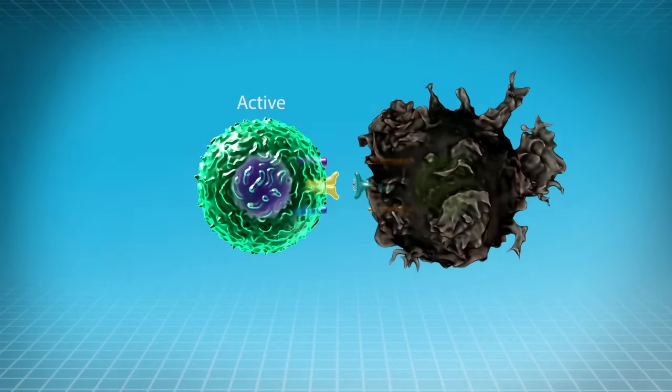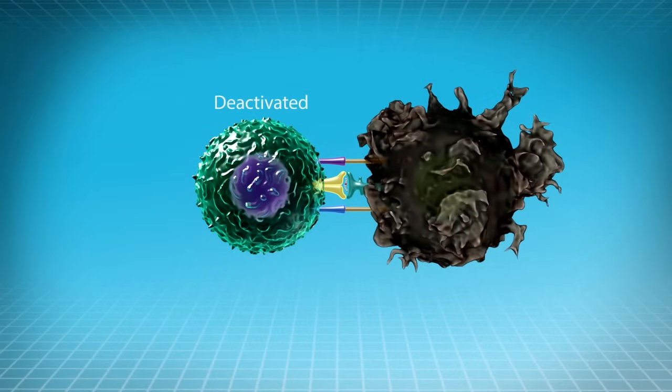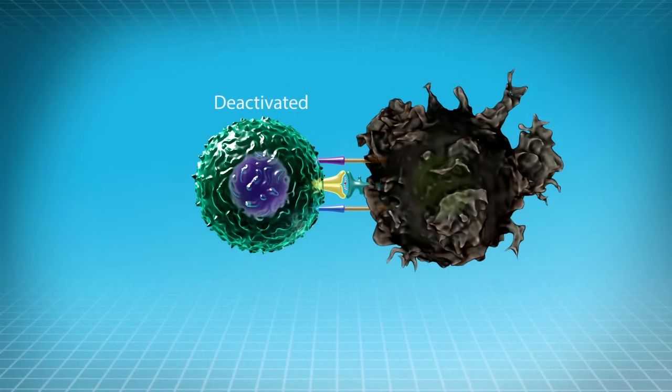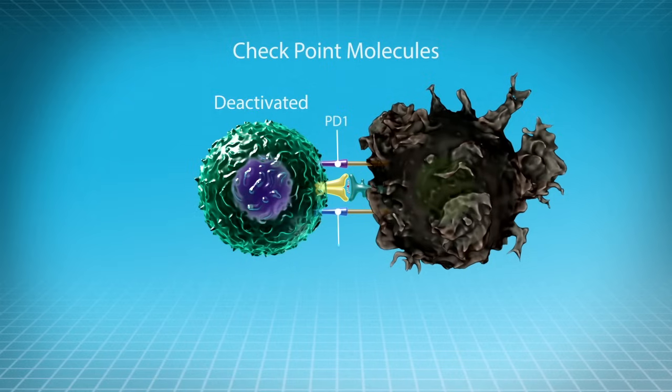For example, tumors can express attack molecules on their surface that bind to the T cells and inhibit their killing activity. These molecules are called checkpoints, and examples are PD-1 and CTLA-4.